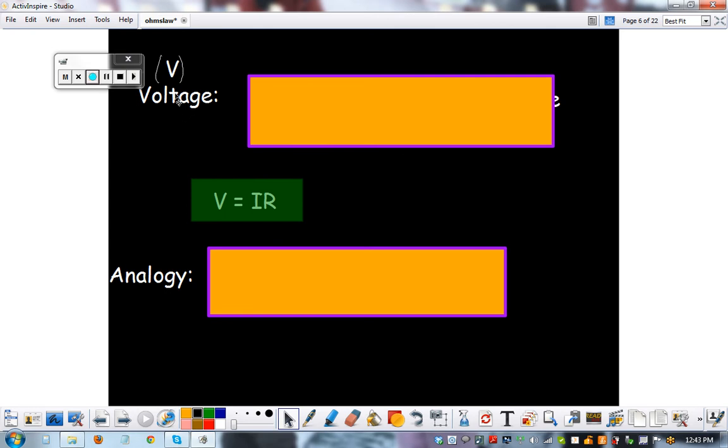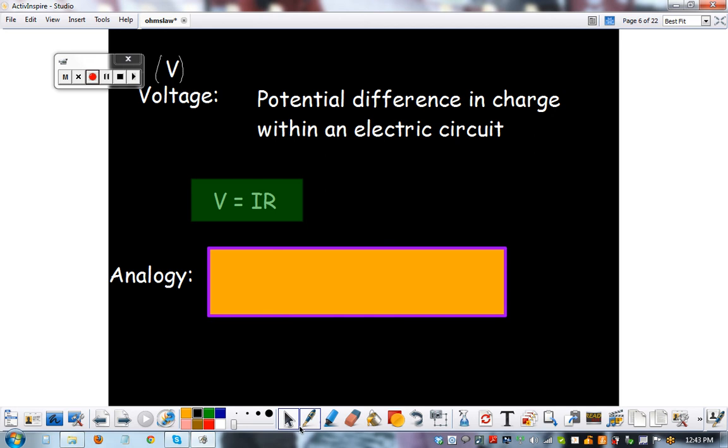V is for voltage. Voltage is a formula symbol, capital V. And it's a potential difference in charge within an electric circuit. So if you have this potential difference, it's one word for voltage. You can use them the same way. Another word is electric potential energy. Here's your formula. We'll talk about that more later. And we'll use this a lot.